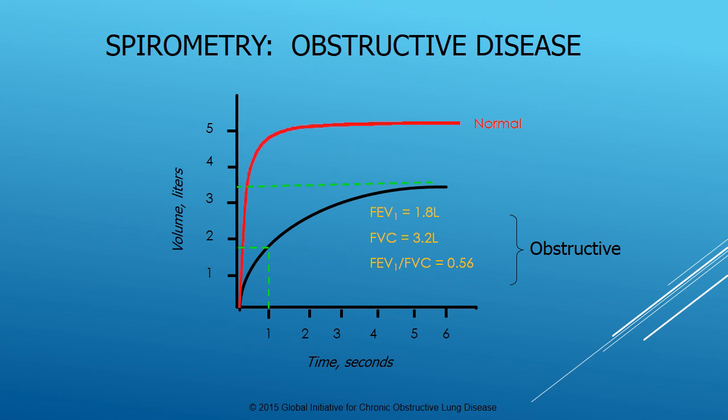For spirometry in obstructive disease, an FEV1/FVC ratio less than 0.7 indicates obstruction. You compare the FEV1 and FVC values — you can see what's normal and how it looks for obstructive disease. You're probably not going to read your own spirometry, but this is pretty classic and something you could recognize quickly once you got used to it.